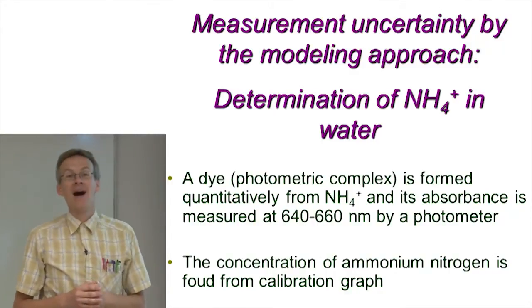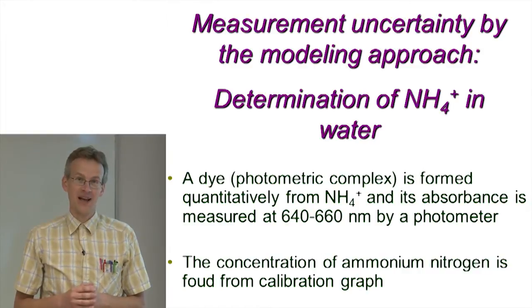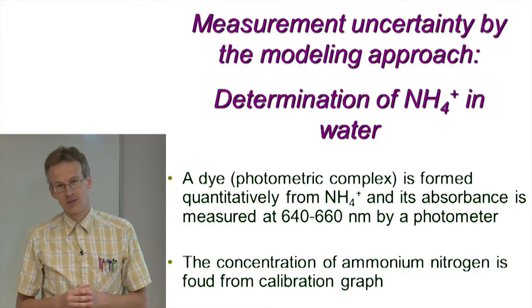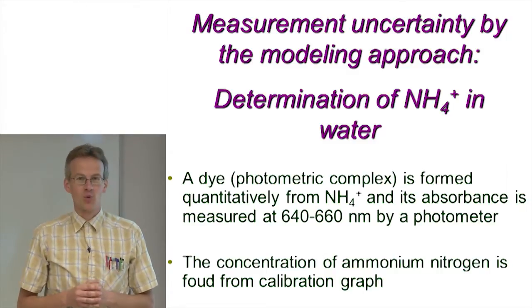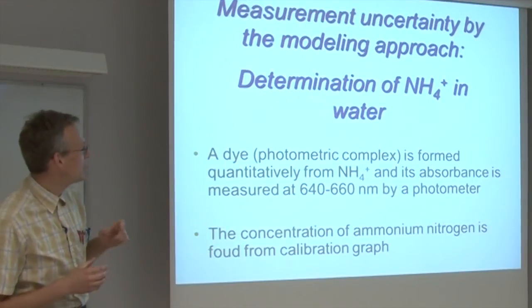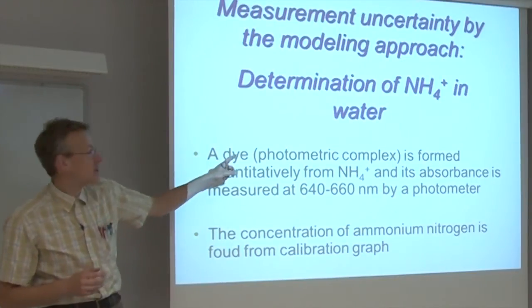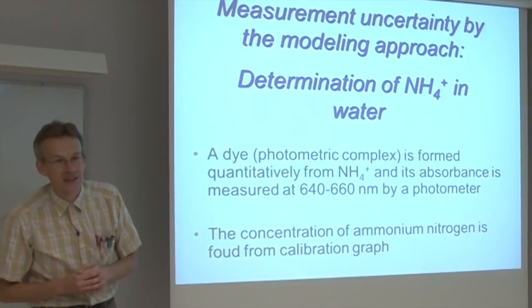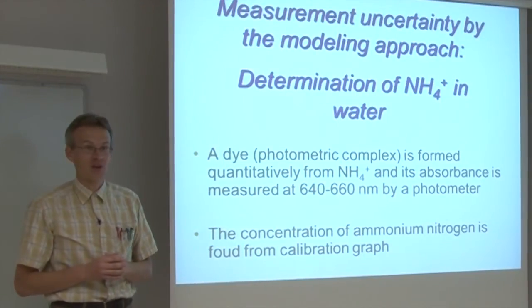We now have most of the knowledge we need for measurement uncertainty estimation, and let us try to apply this to a more serious, more complex example — an example quite like a real-life chemical analysis. I have chosen the determination of ammonium ion in water. Ammonium ion is an analyte very often determined in water, including drinking water, swimming pool water, etc., and it is one of the important characteristics of water quality. Very often ammonium ion determination is carried out using a spectrophotometric method, which is exactly what we will be looking at.